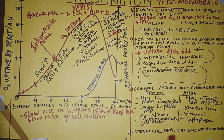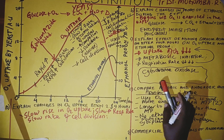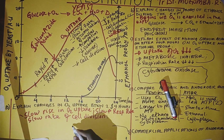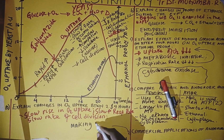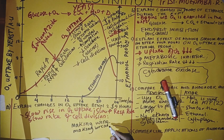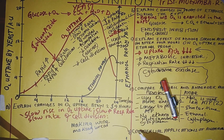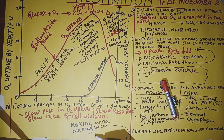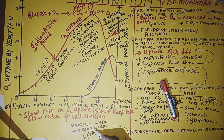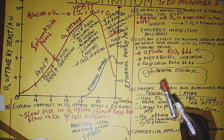We look at the commercial applications of anaerobic respiration. It is applied in making wine, where they take advantage of the ethanol produced. It is applied in making bread, where they take advantage of the carbon dioxide produced which raises the bread. It is also applied in making spirits and many other forms including food processing.